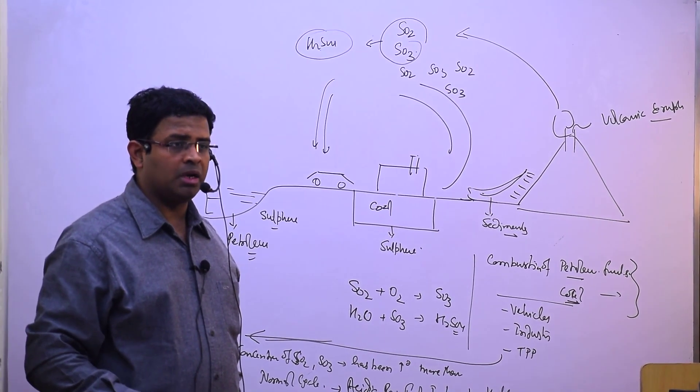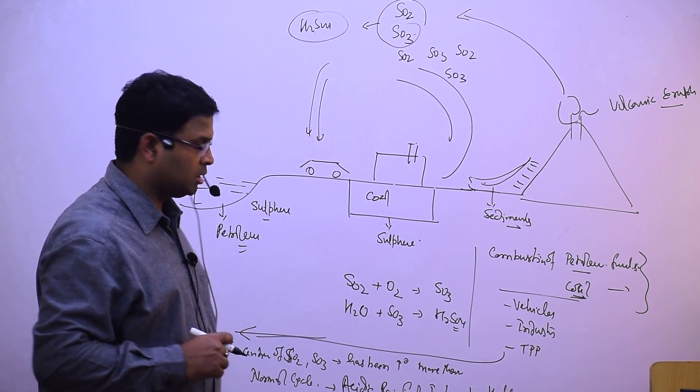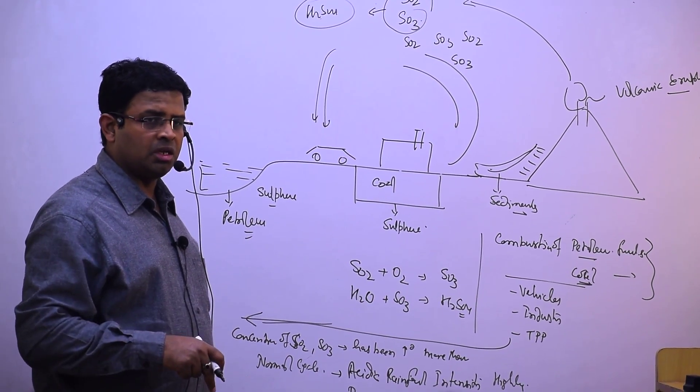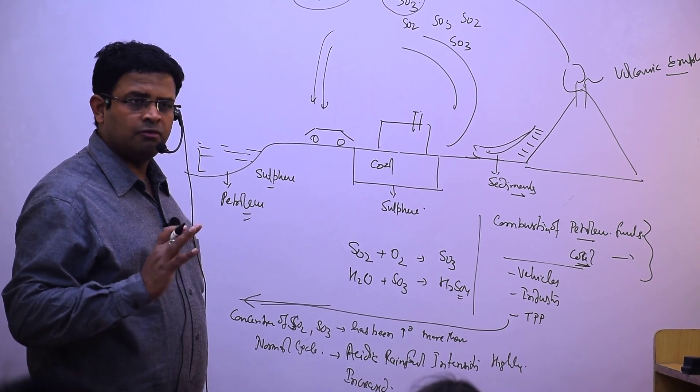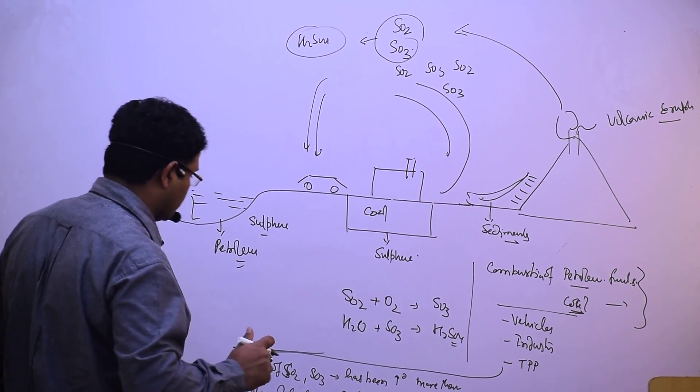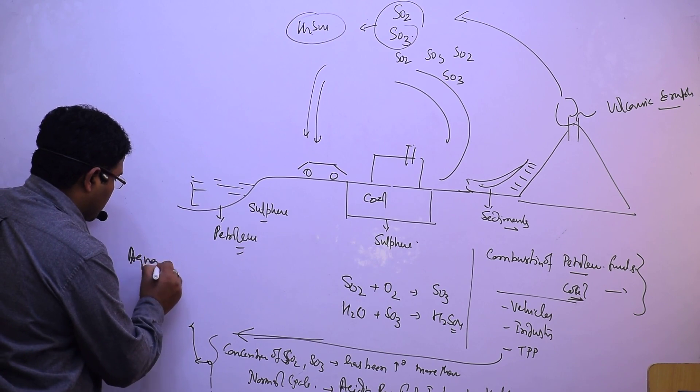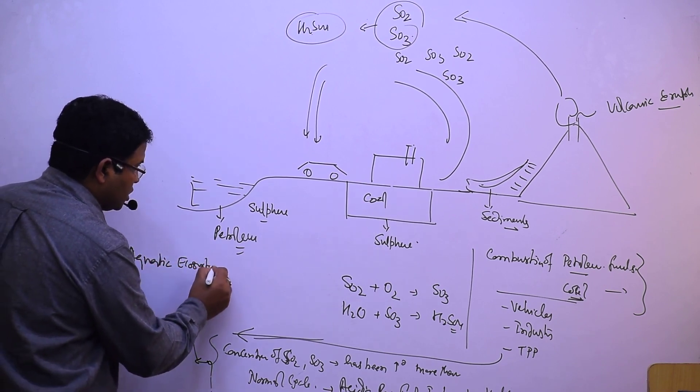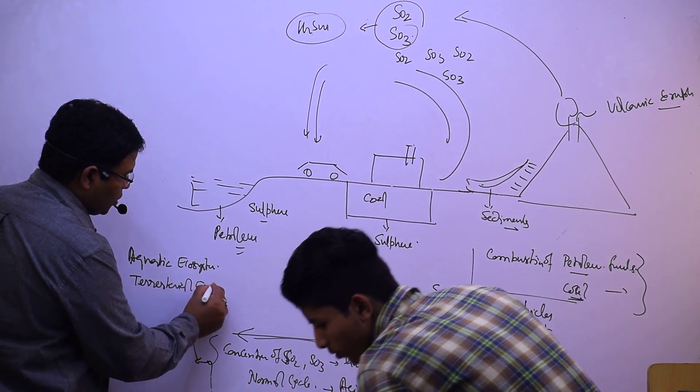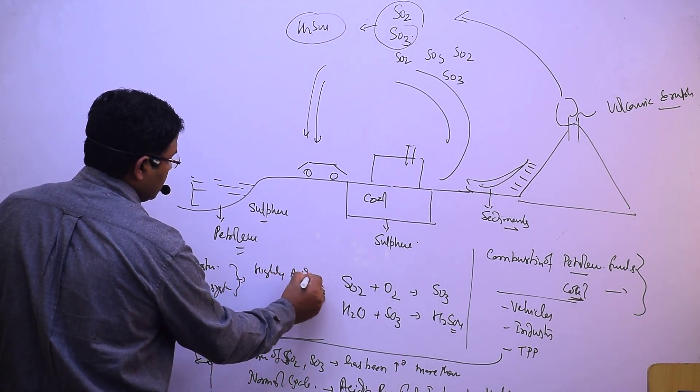Soil and aquatic ecosystem, terrestrial ecosystem, will become highly acidic. Some of the microorganisms and macroorganisms in the terrestrial and aquatic ecosystems will start becoming extinct. Then ecological imbalance in food chains and food webs.